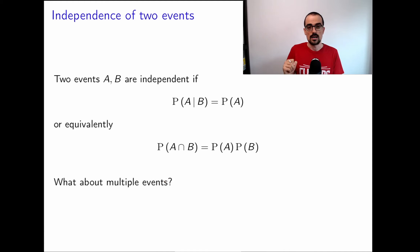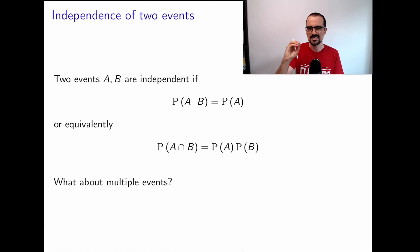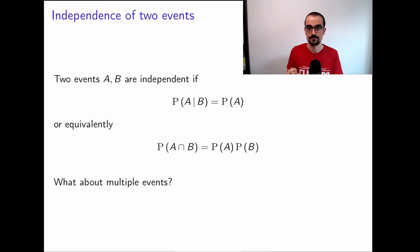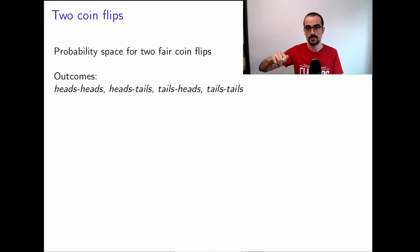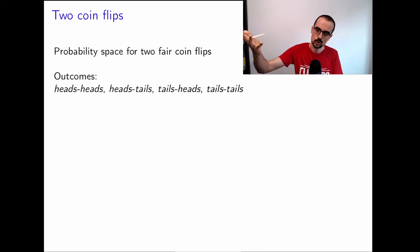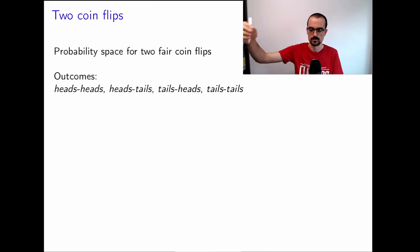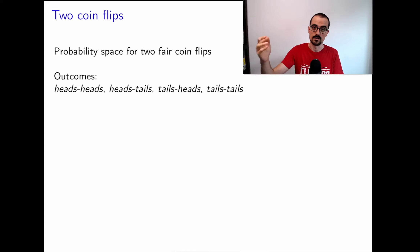What about if we have multiple events? Things get a little bit tricky. To illustrate that, we'll work through an example. Imagine a probability space where we have one fair coin and we flip it twice. The possible outcomes are heads-heads, heads-tails, tails-heads, and tails-tails.